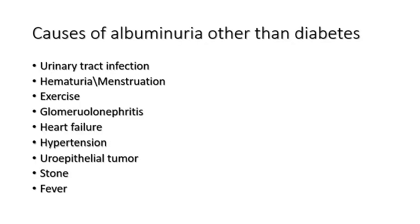There are many causes of albuminuria other than diabetes that should be considered when interpreting urine exam results. Positive urine albumin can be seen in urinary tract infections, immaturity, menstruation in females, excessive strenuous exercise, other glomerular diseases like glomerulonephritis or nephrotic syndrome, heart failure, severe hypertension, urothelial tumors, urinary stones, and fever. Therefore, a general urine examination is often performed to exclude urinary tract infection before interpreting the urine dipstick or quantitative microalbumin assay.